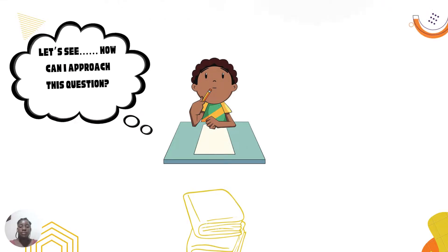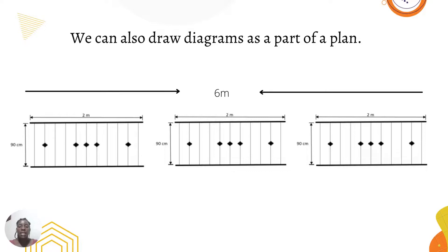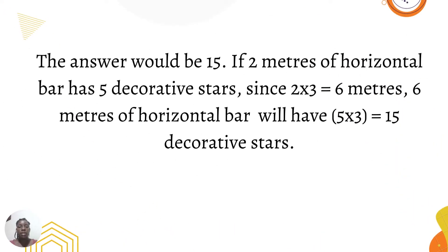Let's see how we can approach this question. We can use the information given in the question and make calculations, or we can also draw diagrams as part of a plan. In the diagram we can see three handrails. The three horizontal bars that measure two meters each will add up to six meters. We can count the decorative stars — counting up to 15 — so the answer would be 15.